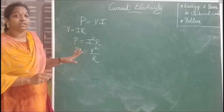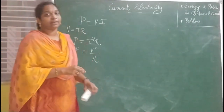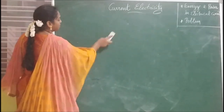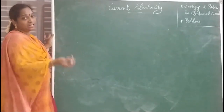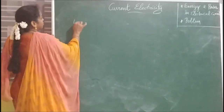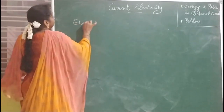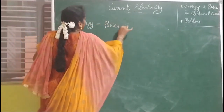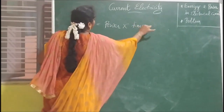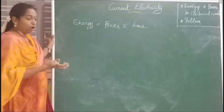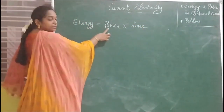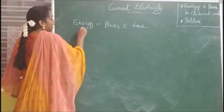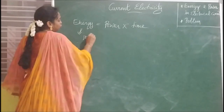Now we are going for electric energy. Electric energy for some device is nothing but the product of power and the time taken. So energy equals power multiplied by the total time period of the device in operation. Power is represented in watts and time in seconds, therefore energy is represented in joules.